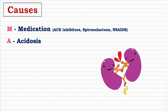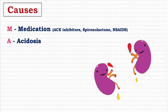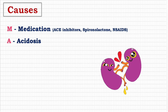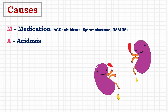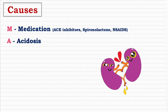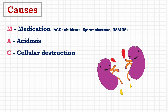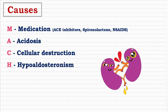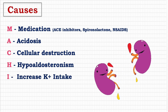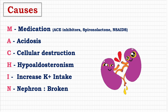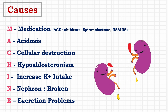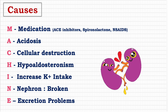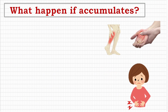In acidosis, potassium moves from intracellular to extracellular fluid — that is, into the blood — in exchange for hydrogen ions, leading to hyperkalemia in blood plasma. The same mechanism occurs in cellular destruction, with a shift of potassium from intracellular to extracellular space. Other causes include hypoaldosteronism leading to decreased GFR, increased potassium intake from diet, damaged nephrons, and excretion problems, all of which ultimately increase potassium levels.